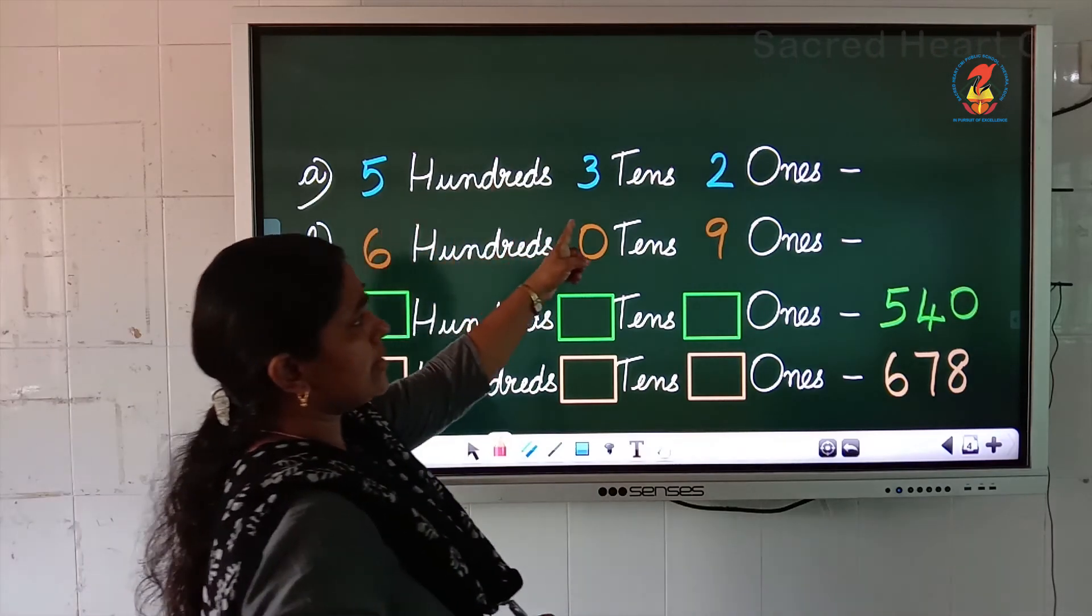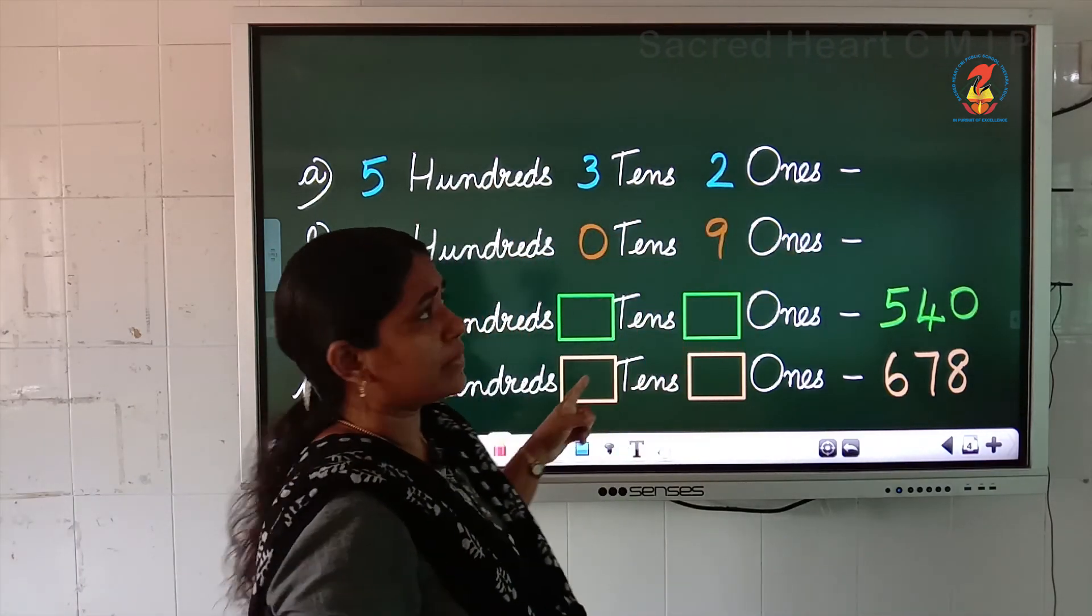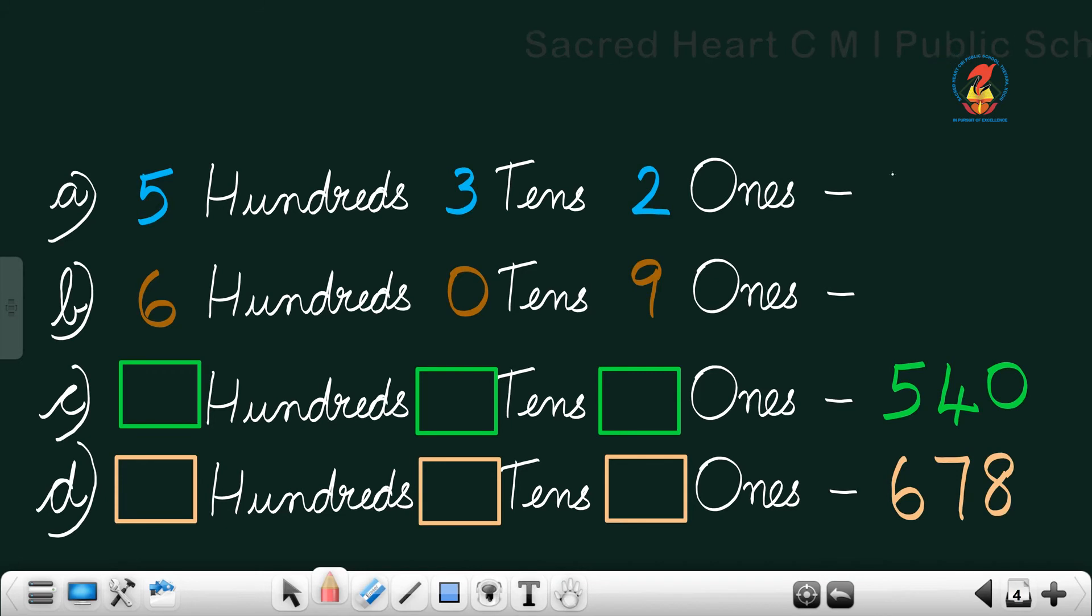You have to write the number. So, 500s, 3, 10s, 2, 1s. What is the number? 532. 1s place is the number 2, 10s place is the number 3 and 100 place is number 5. Okay children.